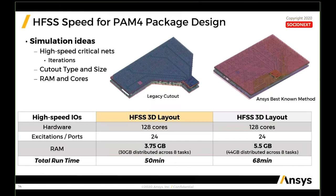With the introduction of HFSS 3D layout, we introduced new ANSYS best-known methods. One of the most common is to use a simple rectangular cutout to incorporate the entire power ground structure as a return path in the model. Presented here are two different model sizes solved on identical hardware, and you can see the runtime is nearly identical — approximately 1 hour 15 minutes versus 68 minutes — and RAM consumption is very comparable: 3.75 GB versus 5.5 GB.